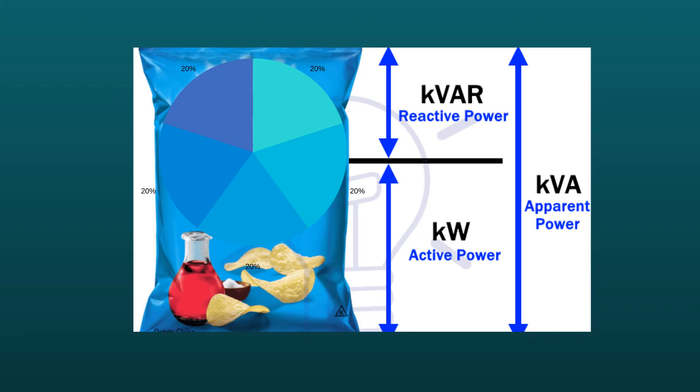There is a very interesting picture that helps you understand the different powers easily. You can see the level of chips — up to that level is the useful quantity, representing active power. The imaginary quantity, which is the air above, represents reactive power. The combination of both represents complex or apparent power.